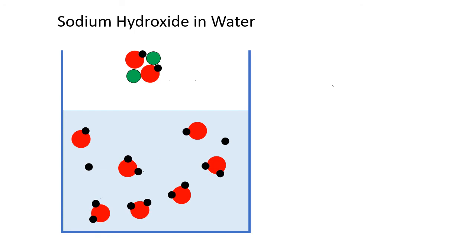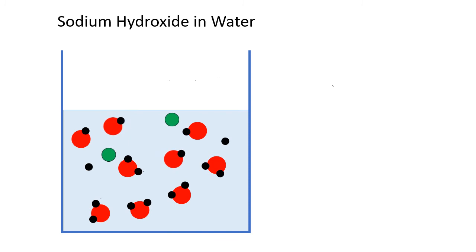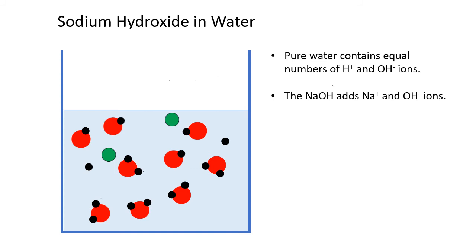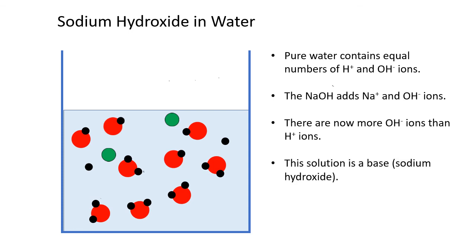Let's look at bases. Here we have a little crystal of sodium hydroxide, made up of the green sodium ions and the polyatomic hydroxide ions. When we drop it in the water, like all ionic compounds, the ions separate. Once again, the water initially had equal numbers of hydrogen and hydroxide ions. When we dissolve the sodium hydroxide, we've added some positive sodium ions and some negative hydroxide ions. So this solution has more hydroxide ions than it does hydrogen ions. Again, we're not saying more negatives than positives — they're the same. But all the negative ions in this solution are hydroxide ions, while only some of the positive ions are hydrogen ions; the others are sodium ions. So in this solution, there are more hydroxide ions than there are hydrogen ions, and that's what makes it a base.